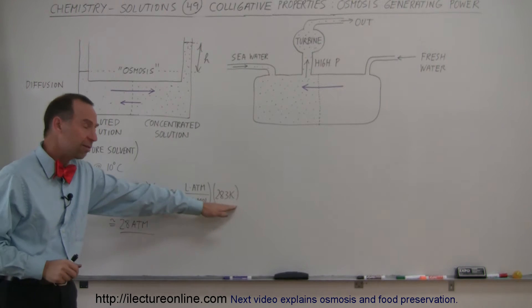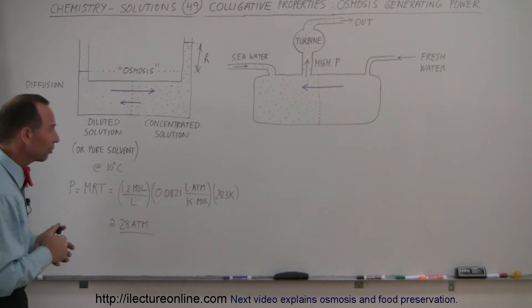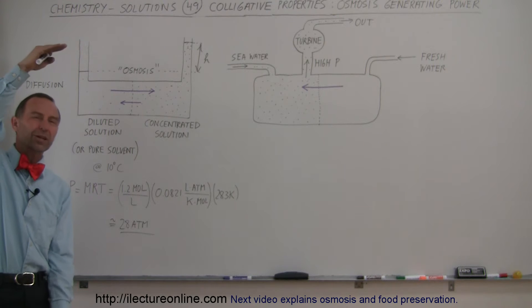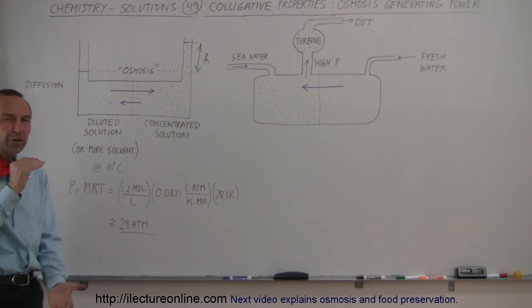The gas constant and then the temperature, let's say 10 degrees centigrade, about 280 Kelvin, will give you a pressure of about 28 atmospheres. That's enough pressure to build a water column almost 300 meters tall or 900 feet high.